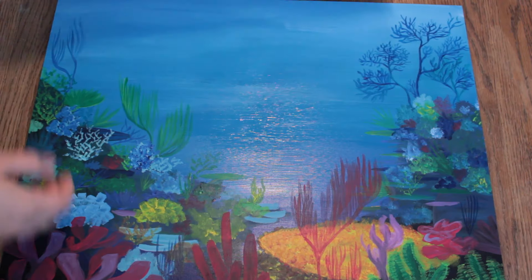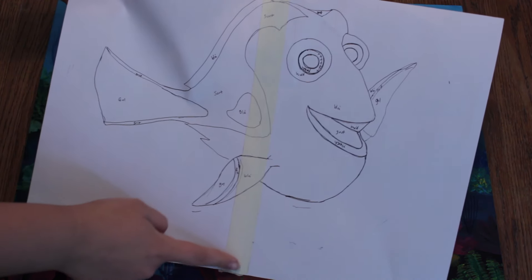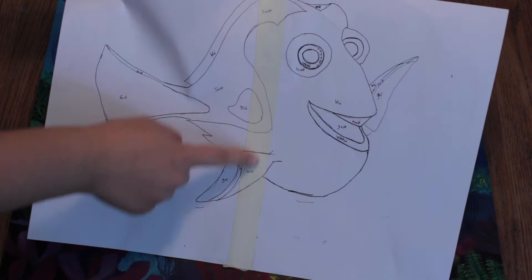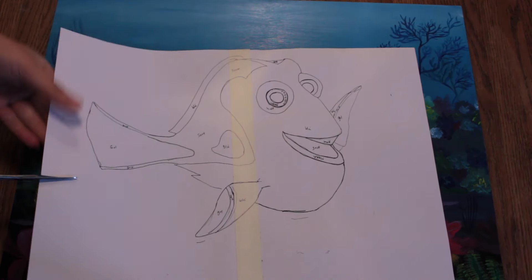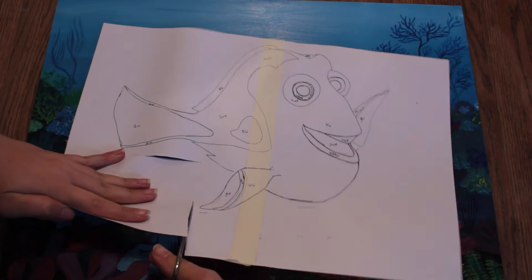Now take your stencil and you can either print it out or draw it from a screen as I did. I used two pieces of paper because my board was so big and I had to use some painter's tape down the middle. Now I'm just cutting the excess off because I only need the drawing of Dory.